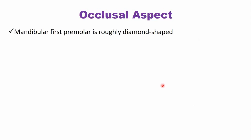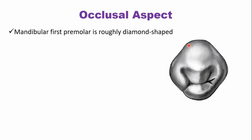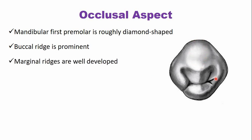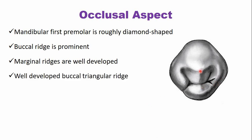From the occlusal aspect, the mandibular first premolar is roughly diamond-shaped. The buccal ridge is prominent, similar to the labial ridge in the canine. There are well-developed mesial and distal marginal ridges. The mesial marginal ridge terminates with a mesiolingual developmental depression. From the buccal cusp tip, there is a well-developed buccal triangular ridge — a raised linear elevation running toward the lingual side.